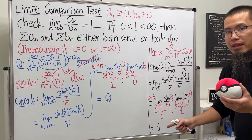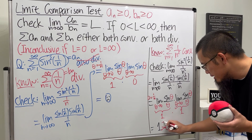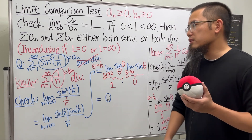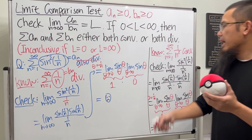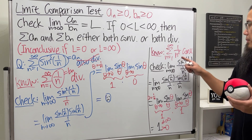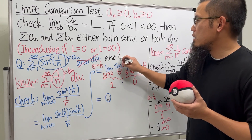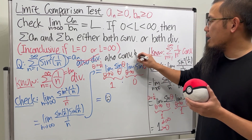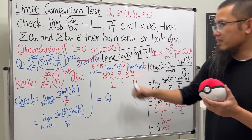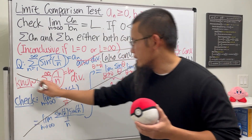Computing the limit of aₙ/bₙ with bₙ = 1/n², each factor of sin(1/n) divided by (1/n) famously equals one, so the overall limit is one times one, which equals one. This is greater than zero and not equal to infinity, so we can draw a conclusion: since the p-series 1/n² converges, the series sin²(1/n) also converges — by the limit comparison test. This is the correct solution.